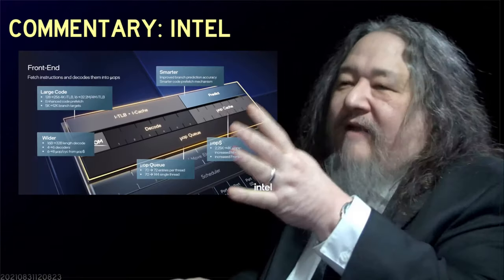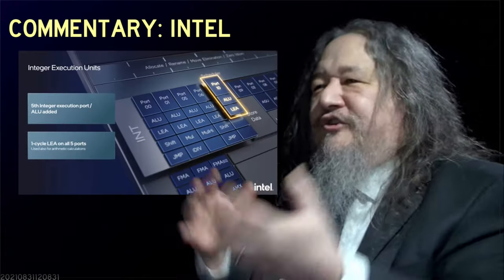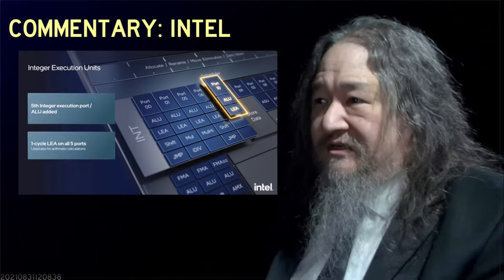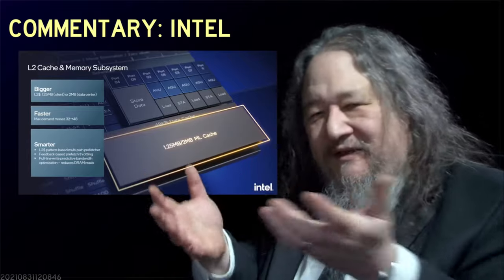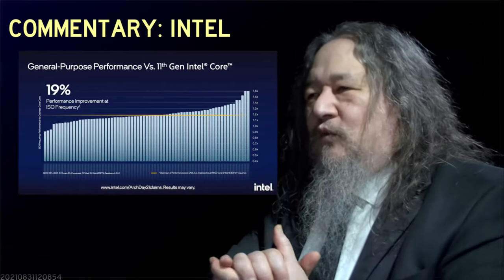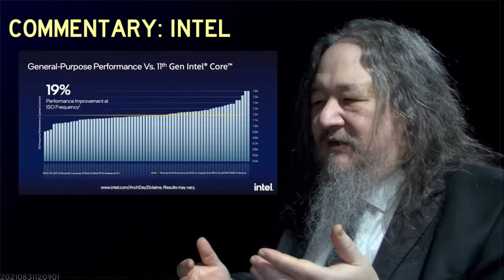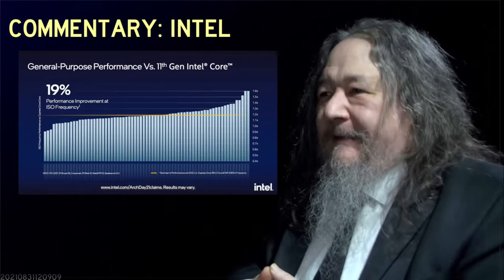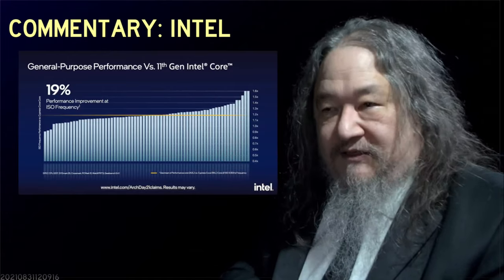They try so hard in the Architecture Day to make it seem revolutionary — new, new, new, incredible. And what do you get? You get a 19% improvement. Is that great? I guess it's great, especially if you're deciding whether to buy your next computer — would you rather have 20% slower or 20% better? But it doesn't really feel like, 'oh wow, that's blowing the lid off the joint.' This is how we're going to get dominance back? A 19% improvement.